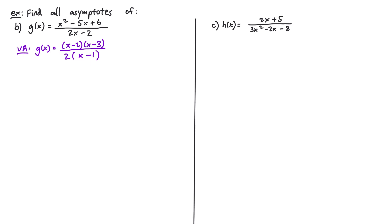Looking at our rational function, there are no common factors between the numerator and denominator, so there's nothing to cancel. We set the denominator 2 times x minus 1 equal to zero and solve for x. Dividing both sides by 2 gives x minus 1 equals 0, then adding 1 gives x equals 1. So x equals 1 is our vertical asymptote.